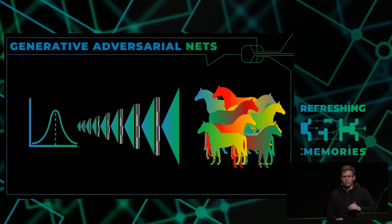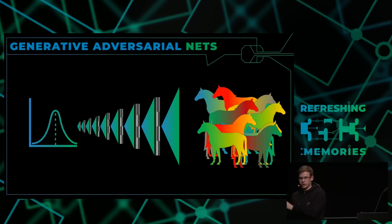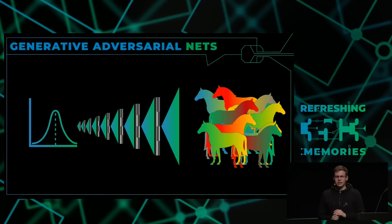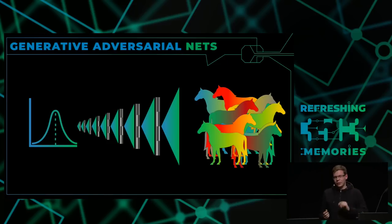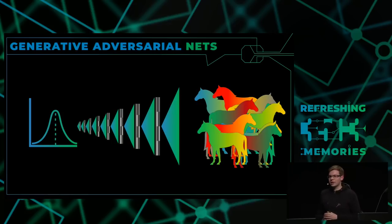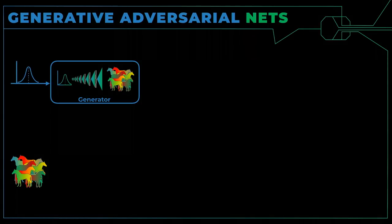Wenn ich eine andere Zahl benutze, soll weiterhin ein Bild eines Pferdes rauskommen, aber eines anderen Pferdes. Das heißt, irgendwie steckt in den Zahlen, die ich reinstecke, die Eigenschaft des Pferdes drin. Aber das ist schwierig, weil es keine Verknüpfung gibt zwischen den Eigenschaften eines Pferdes und diesen Zahlen. Man muss irgendwie lernen, wie man diese Verknüpfung herstellen kann. Computeringenieure sind schlau und haben kreative Ideen — dieses Teil nennen sie einen Generator, eine Funktion, die aus Zahlen etwas herstellen kann.